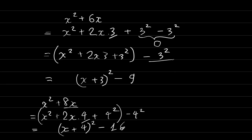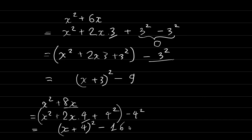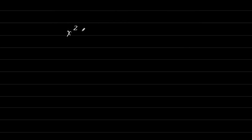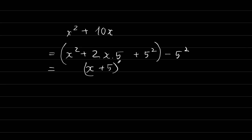Here is the last example: x² + 10x. We rewrite as x² + 2·x·5, so the last term is 5² = 25. We add 5² and subtract 5² to leave the expression unchanged. The first three terms combine, giving (x+5)² - 25.